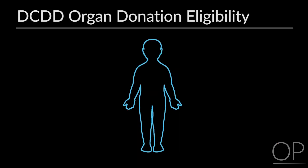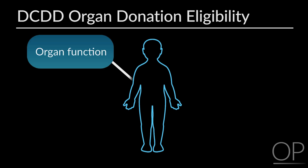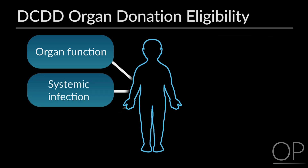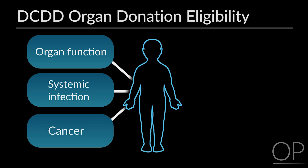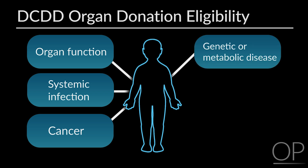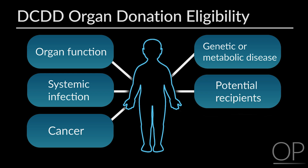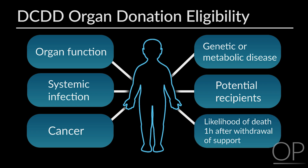The NEOB's evaluation for medical eligibility includes several important factors: namely the patient's organ function, particularly that of the kidneys and liver; any systemic infectious concerns or an unknown diagnosis that could be infectious; the chance for metastatic or primary cancer of the organs that would be transplanted; any underlying systemic genetic or metabolic disease that may affect organ function in the future; and whether there are potential recipients who need the patient's size of organs. Another very important issue for eligibility in DCDD is the likelihood that the patient will die within one hour of withdrawing the ventilator and any cardiac support.